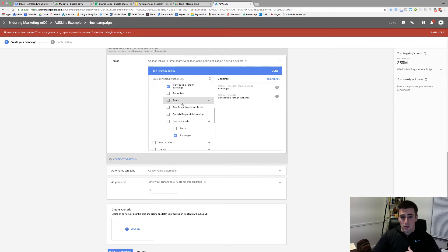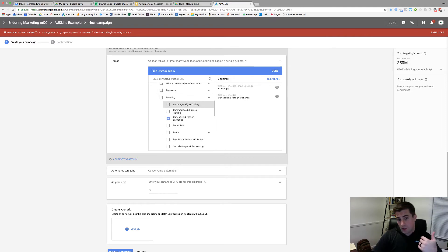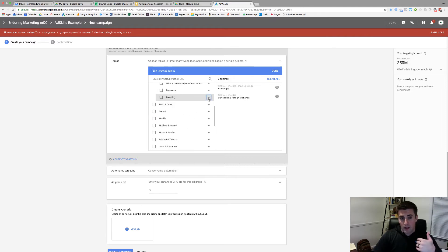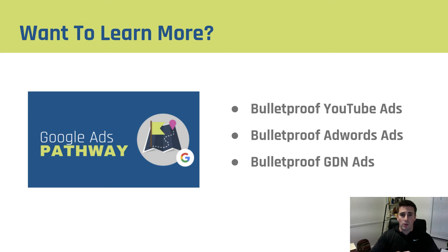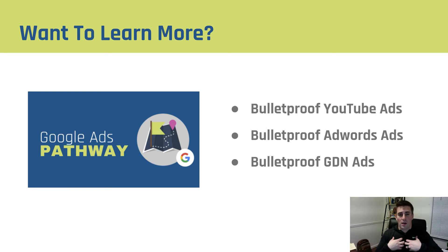That's really all you need to do. I know it seems very simple, but it's honestly helped me find a lot of very valuable topics to advertise on, both on GDN and on YouTube. If you found this tutorial helpful and want to learn more about how to successfully advertise on Google, make sure to check out our Google Ads pathway. It includes our Bulletproof YouTube Ads, Bulletproof AdWords Ads, and Bulletproof GDN courses.